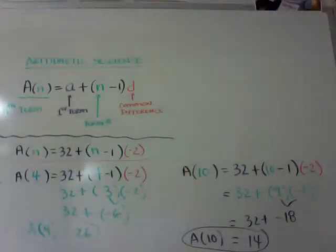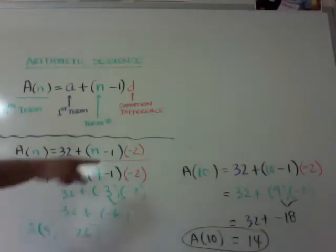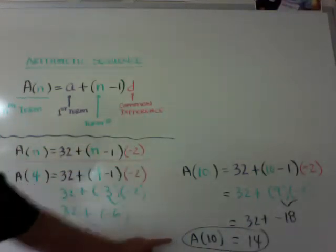So A(10) is equal to 14. What this is saying is the fourth term of this sequence is going to be 26, and the tenth term of this sequence will be 14.